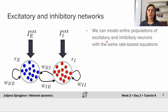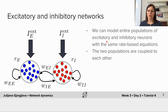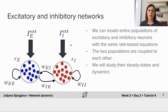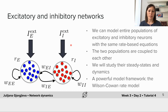We can write equations that look very similar to the equation for the single population of neurons — the same rate-based equations. The difference now is that the two populations are coupled to each other, and we also have external input that could potentially be different across the two populations. The goal of the second tutorial is to investigate the dynamics of these networks using the mathematical framework of dynamical systems, and because we now have two populations we're studying two-dimensional dynamical systems. We will find the steady states or fixed points of these dynamics and investigate their stability. This framework is known as the Wilson-Cowan rate model, developed by Wilson and Cowan in 1974.